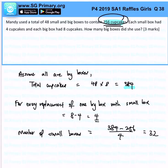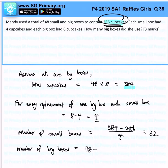So since there are 32 small boxes, the number of big boxes will be 48 minus 32, and that gives us 16 big boxes. That is the answer for this question.